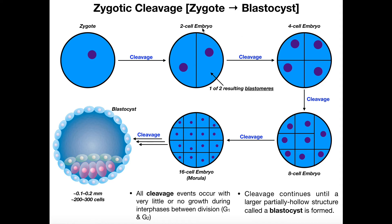In the two-cell stage, each cell is called a blastomere. When the zygote undergoes one cleavage event, you get two blastomeres. The two-cell embryo undergoes cleavage again, and if both cells divide at roughly the same time, we get a four-cell embryo with four total blastomeres. Then the four-cell embryo undergoes another cleavage event and we get an eight-cell embryo. When the eight-cell embryo — eight blastomeres — undergoes cleavage, you're going to have 16 cells, or 16 blastomeres.